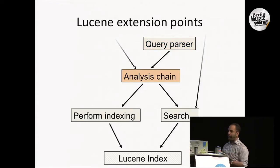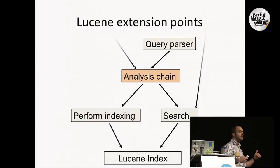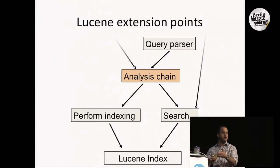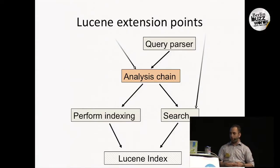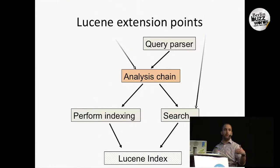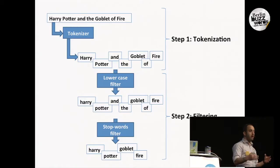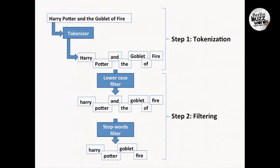Then we have the analysis chain. Whenever you have indexing coming in, or certain searches like query strings, match family queries, they're going to go through the analysis chain. What is the analysis chain? It's basically probably the most important part of Lucene. To demonstrate why - if we have one line of text, the analysis chain is going to take care of tokenization and token filtering for you.